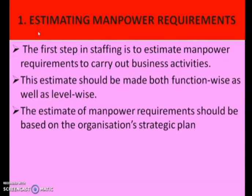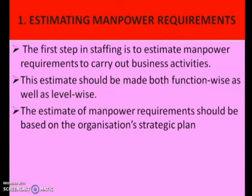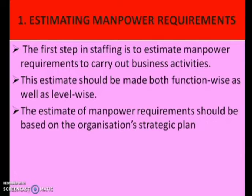The first step in staffing is estimating manpower requirements. The first step is to estimate manpower requirements to carry out business activity — how many staff or employees are required to do a particular business activity. These estimates should be made both function-wise as well as level-wise: how many persons are required for the marketing function or sales function, and how many manpower are required at each level of the organization. The estimates of manpower requirements should also be based on the organization's strategic plan. This is the first step of planning — estimating how many persons are required for a particular job or task.